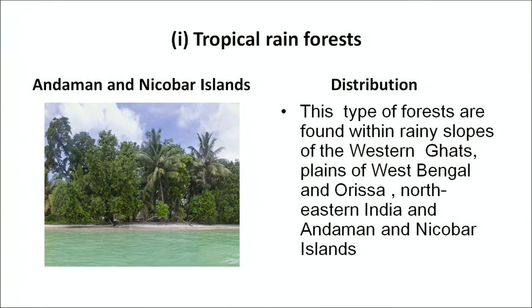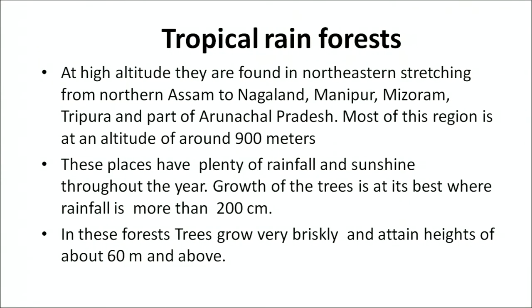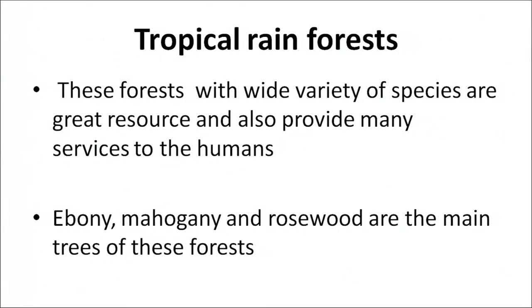The tropical rainforests are found on the rainy slopes of the Western Ghats, plains of West Bengal, Odisha, northeastern India, and Andaman and Nicobar Islands. At high altitude they are found in the northeastern stretches from northern Assam to Nagaland, Manipur, Mizoram, Tripura, and parts of Arunachal Pradesh, mostly at an altitude of about 900 meters. These places have plenty of rainfall and sunshine throughout the year; when rainfall is nearly 200 centimeters, trees grow vigorously and attain heights of 60 meters and above. These forests have a wide variety of species.